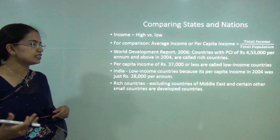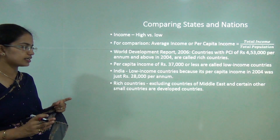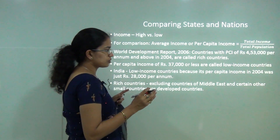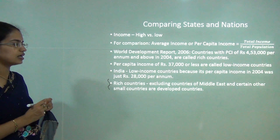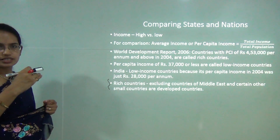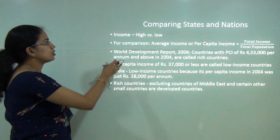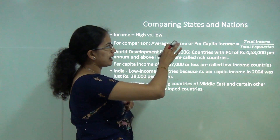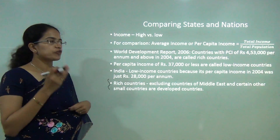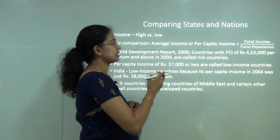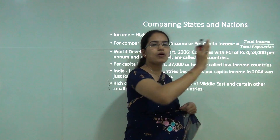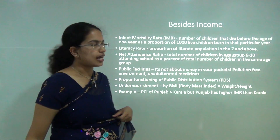When we talk about rich countries, we exclude the Middle East and certain small countries that are developed. We exclude Middle Eastern countries because although they are rich, we would not consider them developed nations. So per capita income is a parameter for comparing development levels, but not absolute or total income.